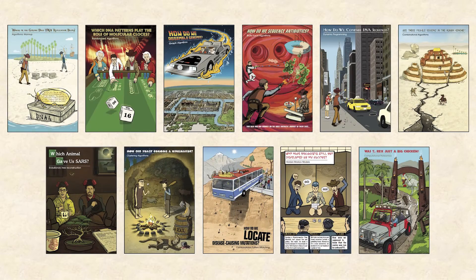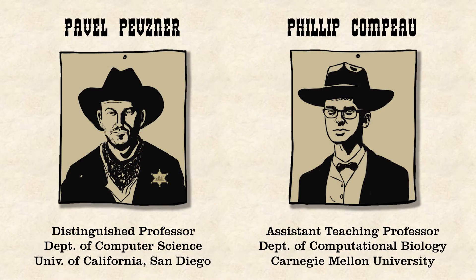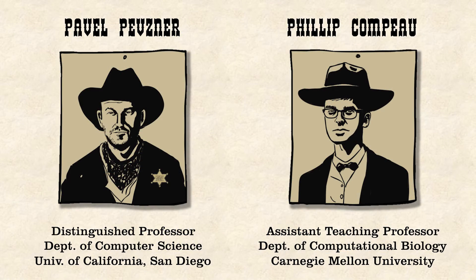Although these instructors may appear crazy, they are not quite as mad as they look. Dr. Pavel Pevsner is a distinguished professor of computer science at the University of California, San Diego, and a leading authority on bioinformatics. He's dressed this way because he sometimes thinks that he's a sheriff of bioinformatics, a frontier discipline underpinning the digital revolution in biology and personalized medicine.